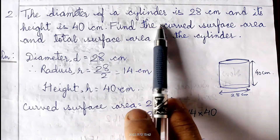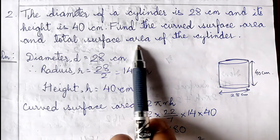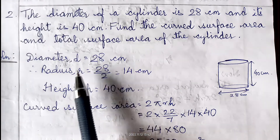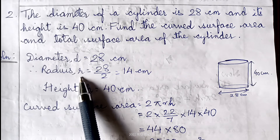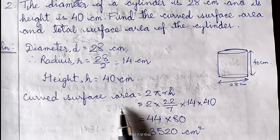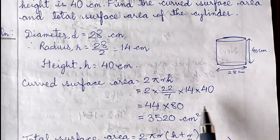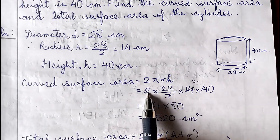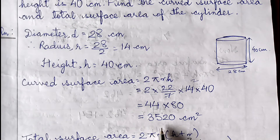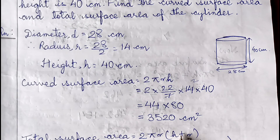Question 2: The diameter of a cylinder is 28 cm and its height is 40 cm. Find the curved surface area and total surface area. Since diameter = 28 cm, radius r = 28/2 = 14 cm, height h = 40 cm. Curved surface area = 2πrh = 2 × (22/7) × 14 × 40. Cancelling 7 and 14 gives 2; so 2 × 22 × 2 × 40 = 3520 cm².